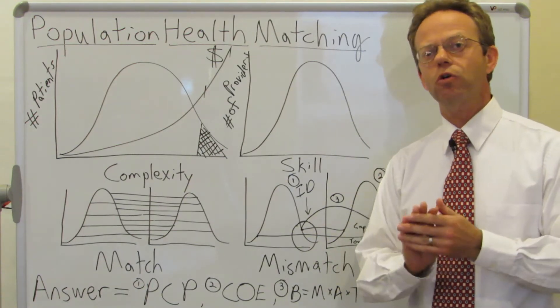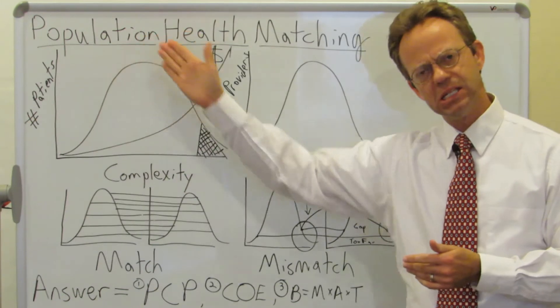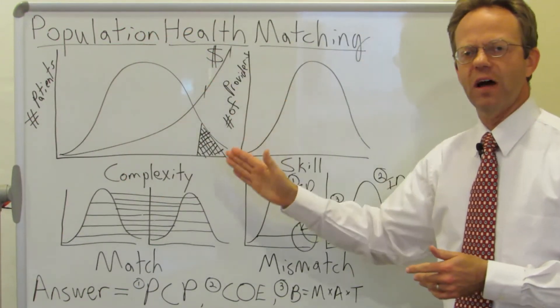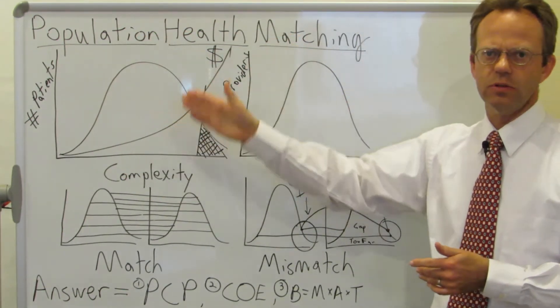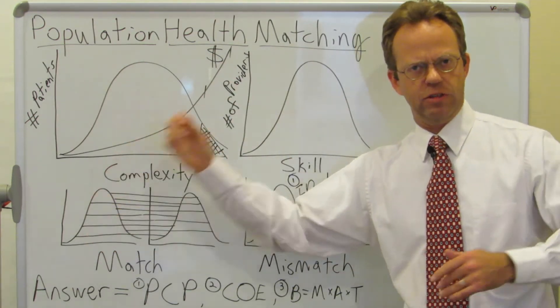And of course, this is in the ideal world where you would want to be able to, one, identify exactly where everybody is on the bell-shaped curve, and then identify where all the docs and the hospitals and all the different healthcare providers are on this bell-shaped curve, and then you would want to perfectly match them up.